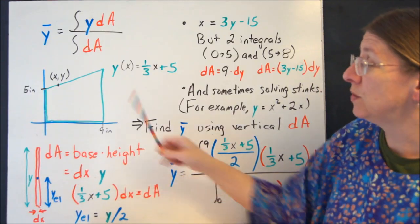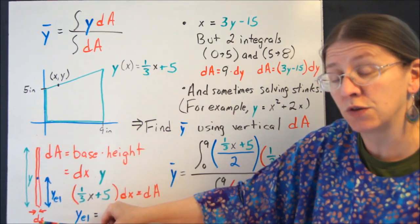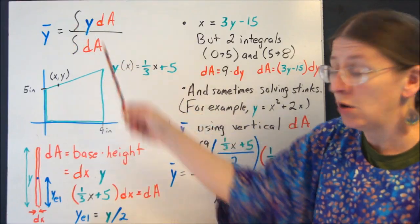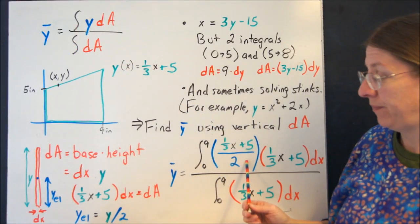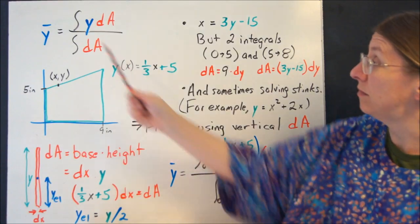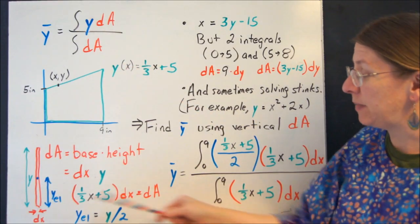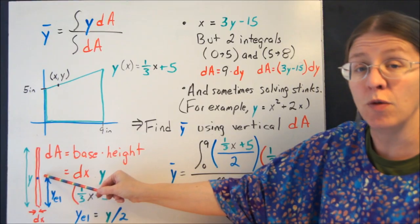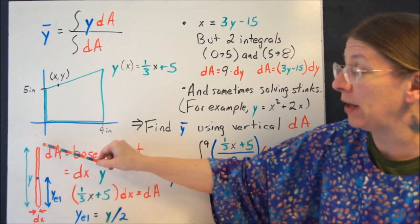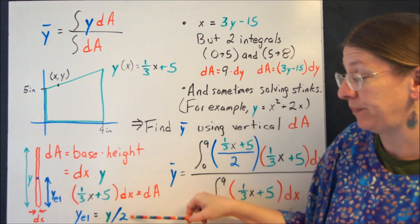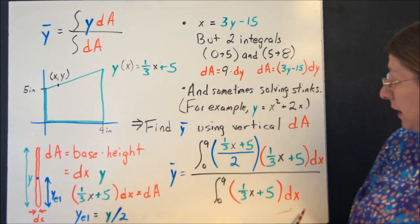So when I actually use a vertical rectangle to find y-bar, what I need to do is integrate, right here, this y, that blue y, needs to be the coordinate for the middle of this. The coordinate of that will not be all the way up at y, it'll be halfway up at y. So when you plug that in.